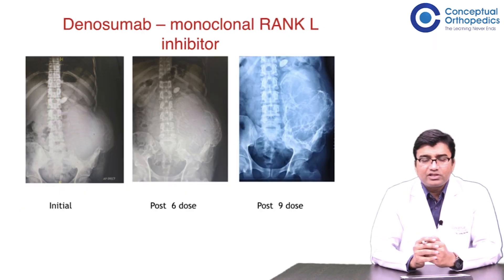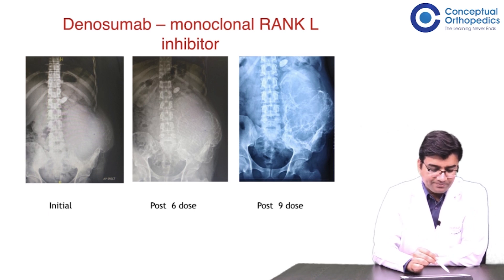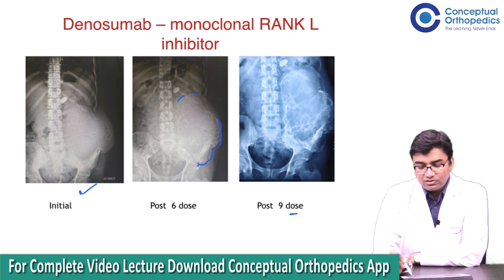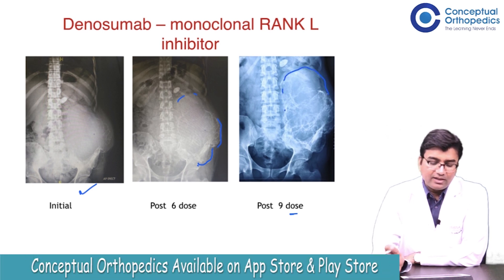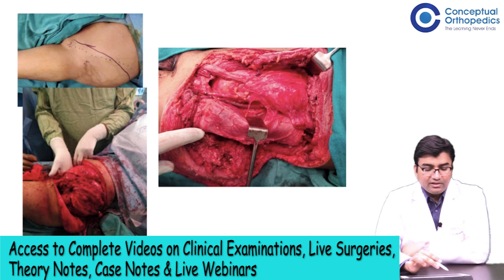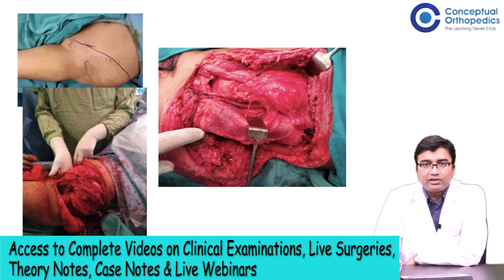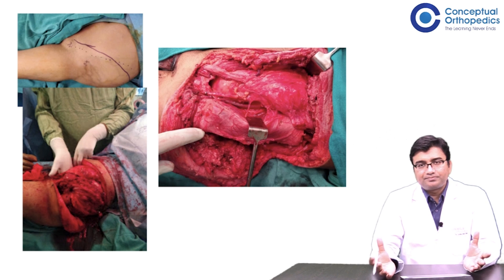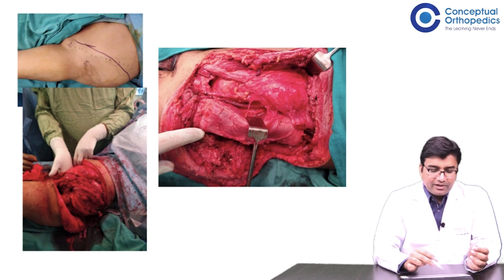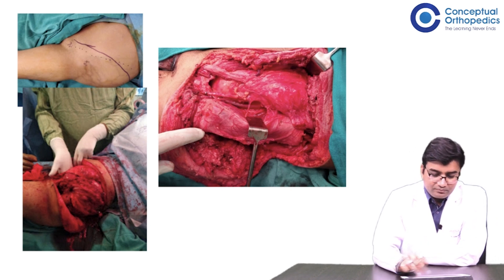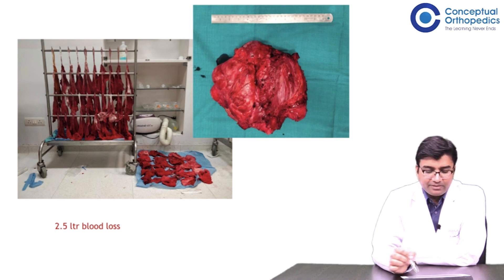We started him on denosumab, a RANK ligand inhibitor. On the initial x-ray and after six doses you can see ossification appearing, and after nine doses the mass had ossified well. We then decided to go ahead with surgery — a standard ilioinguinal approach — planning internal hemipelvectomy, which means removing part of the pelvis while preserving the limb (limb salvage). All major vessels were identified and protected, and the tumor — more than 30 centimeters — was resected.